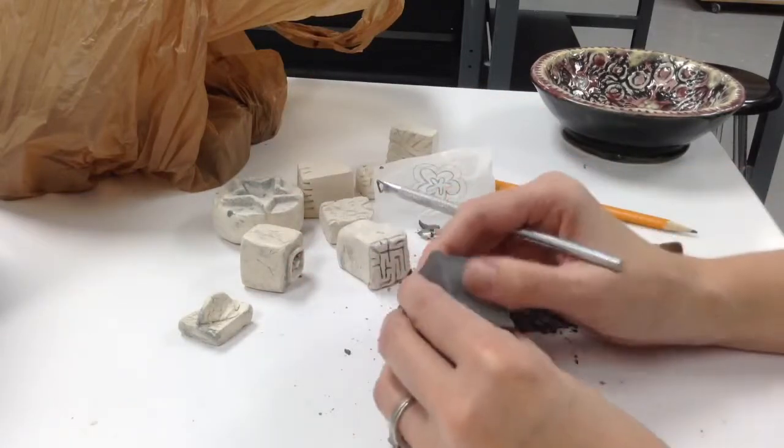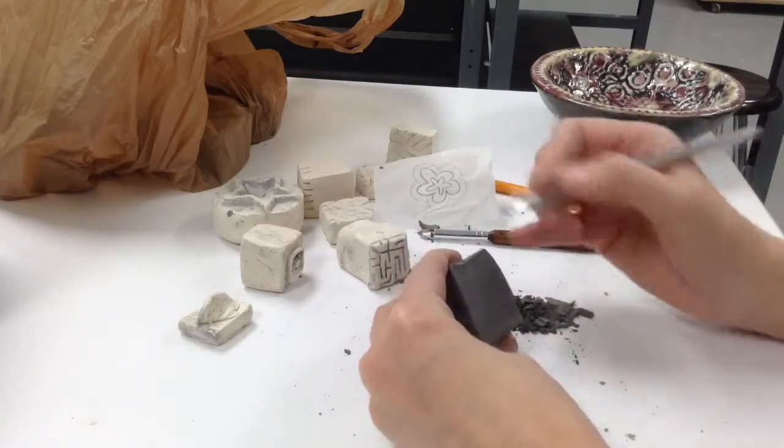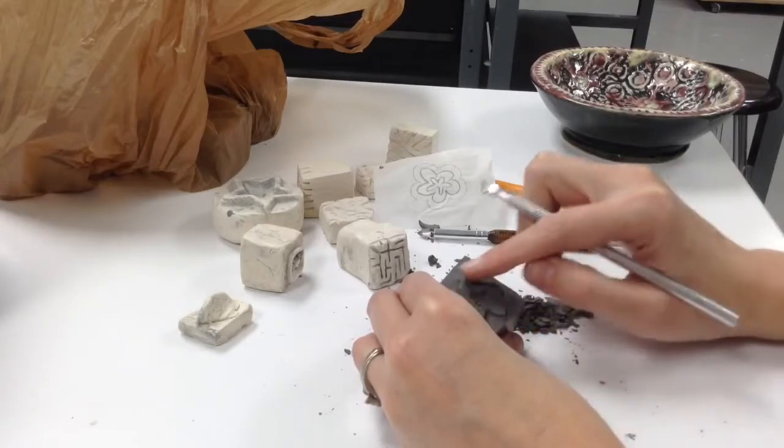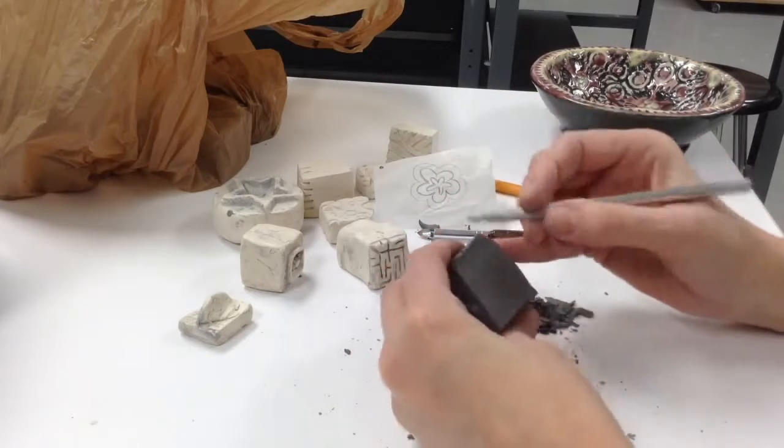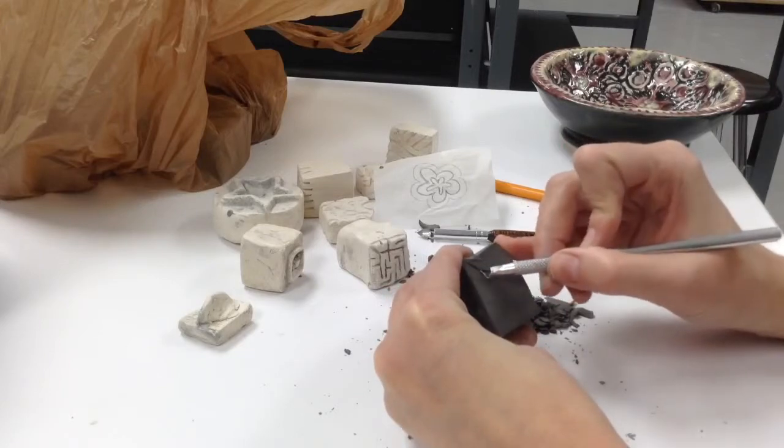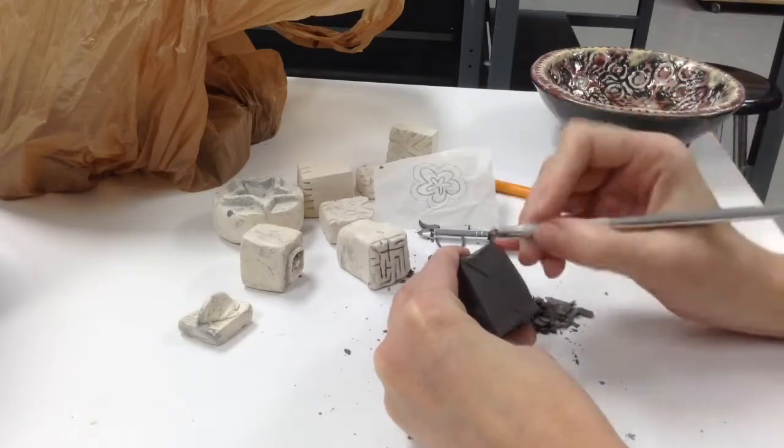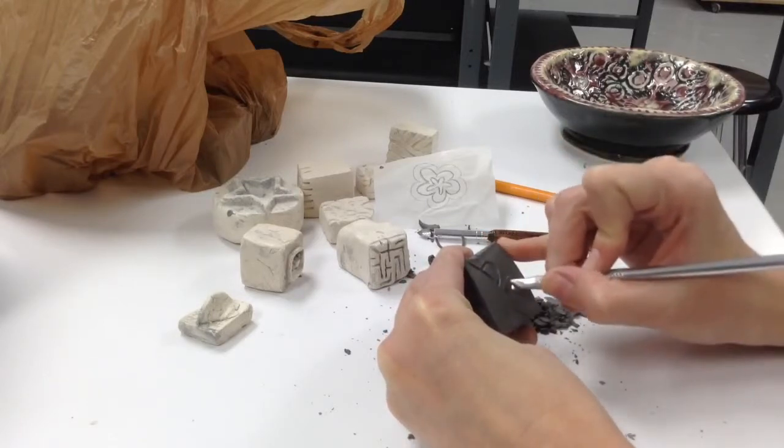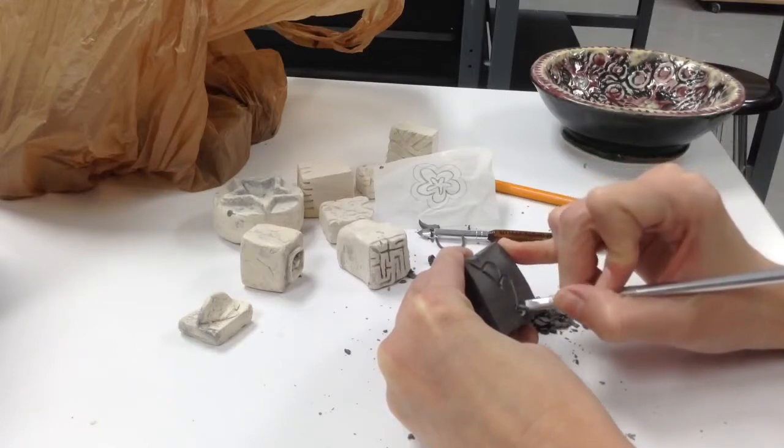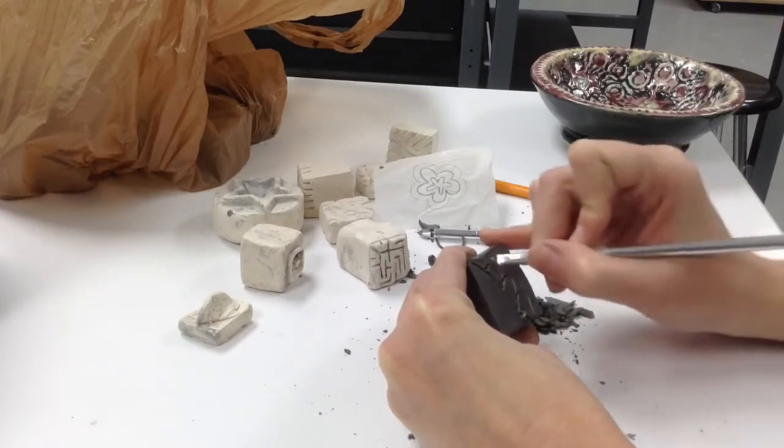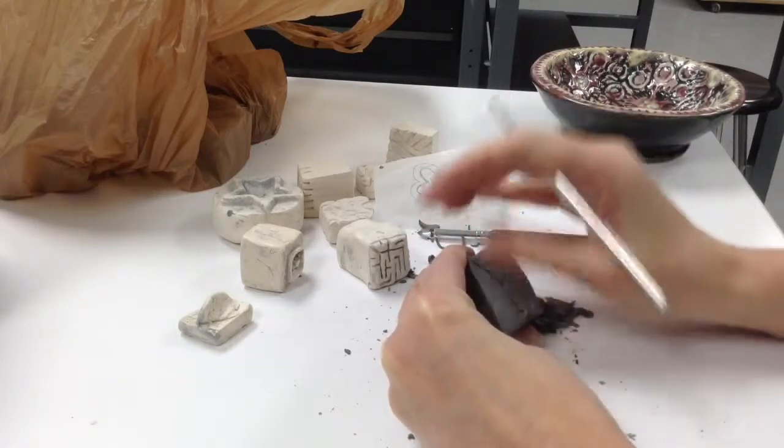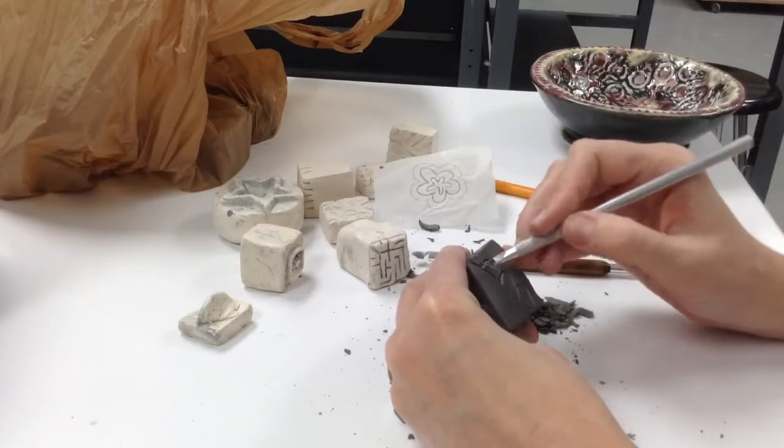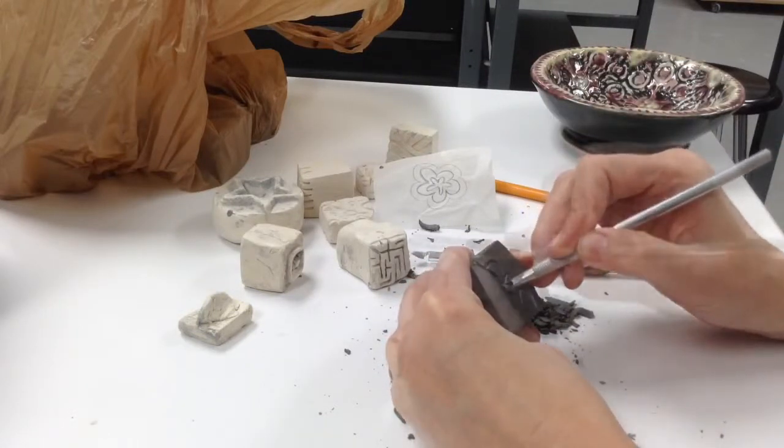The other type of stamp that you can make is just a carved in line stamp. So this was, I subtracted stuff from the outside to make this raise up or I can just subtract things here so that the clay would go into the line of your box.